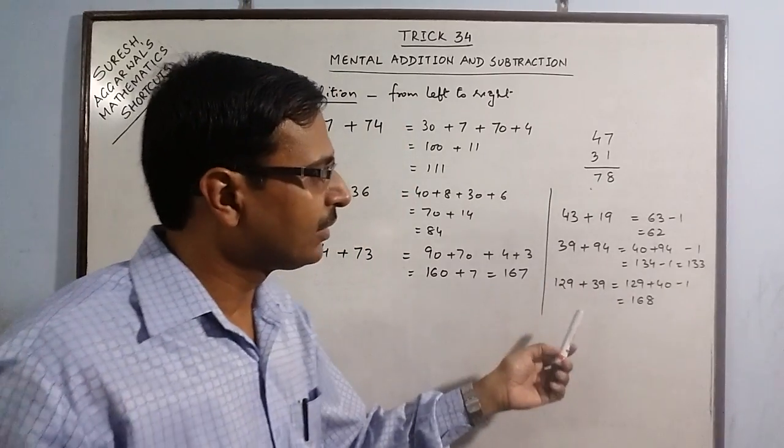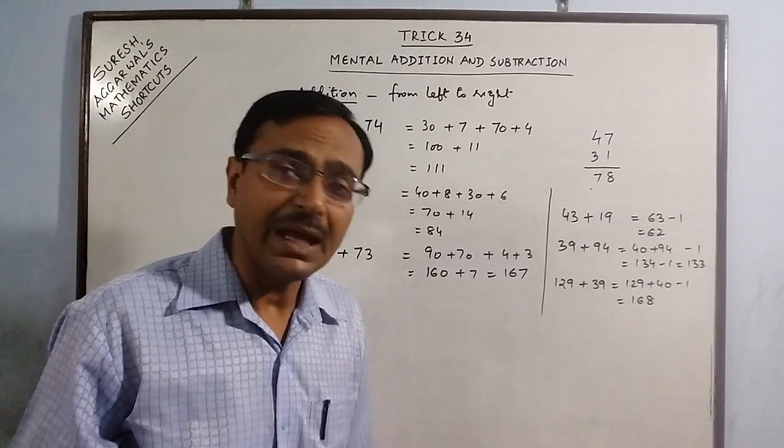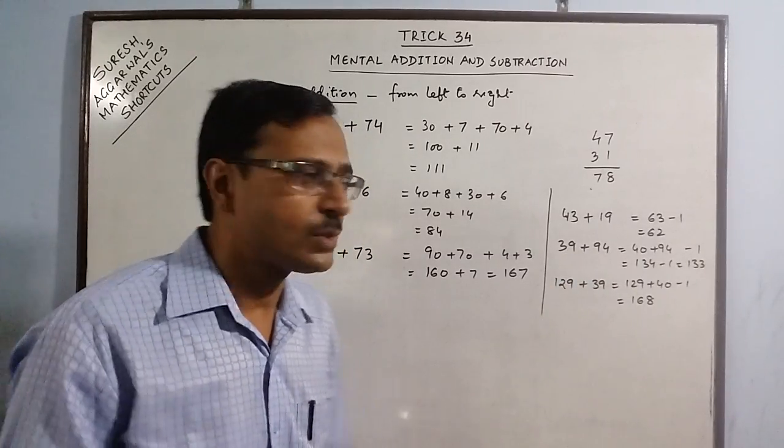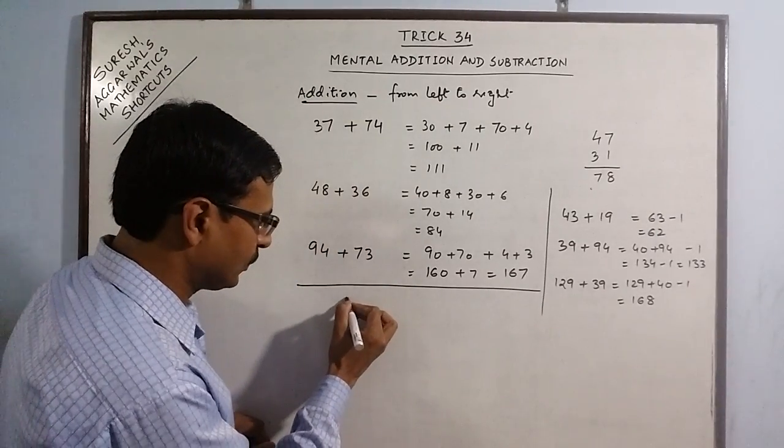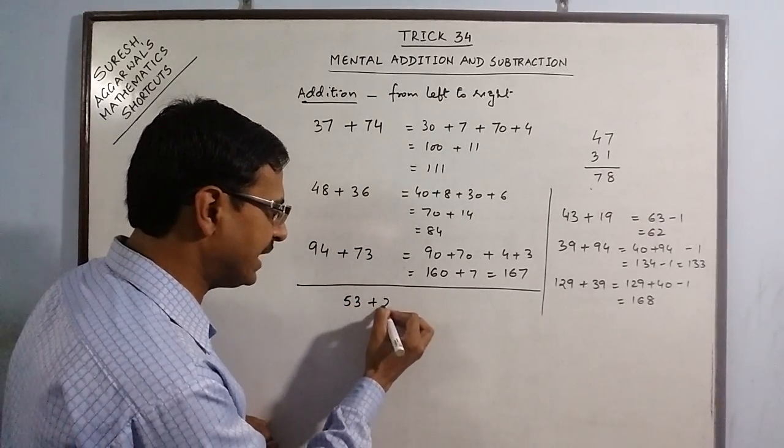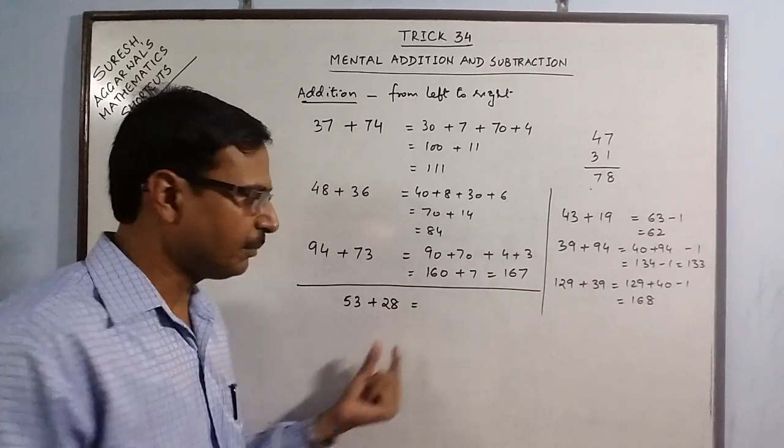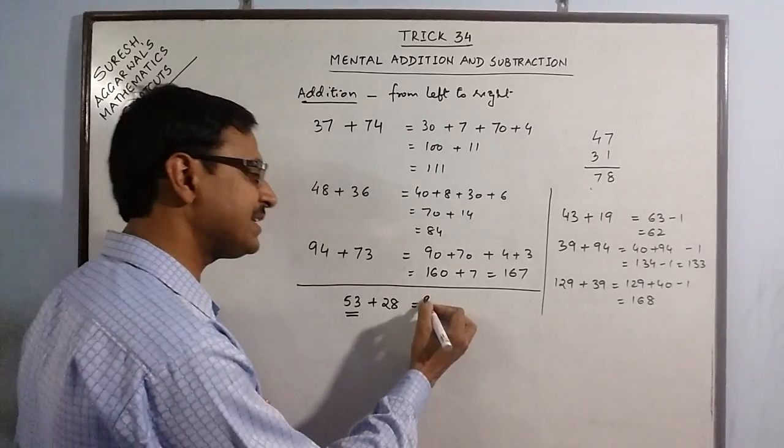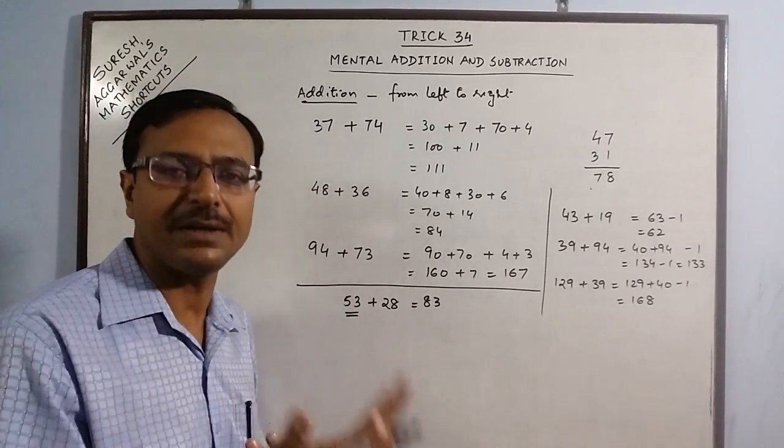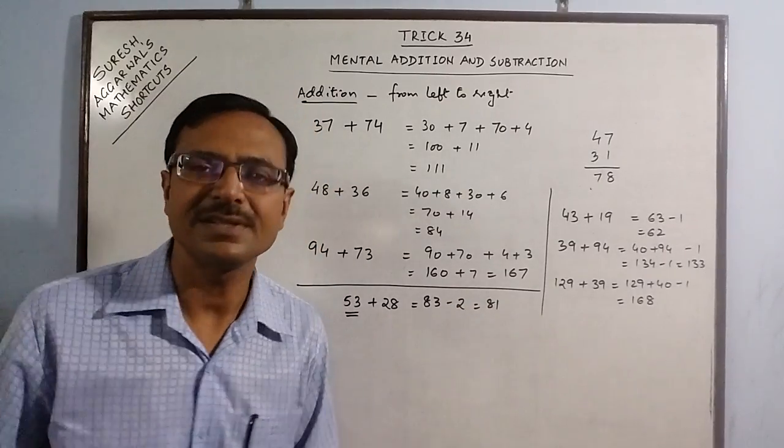And this rule which is applying to 19, 39, 29 and so on can be extrapolated to other numbers also. Say we have 53 plus 28. Now 28 is close to 30 but 2 less than 30. So 53 + 30 = 83. I have increased it by 30 and now reduce it by 2. Your answer is 81. And this part of the calculation takes place in mind. It does not have to be written on any kind of paper or with any aid.